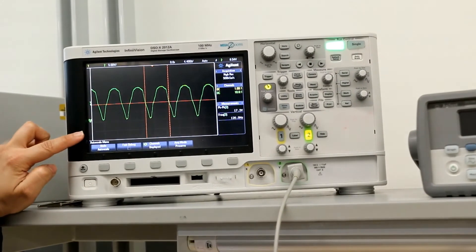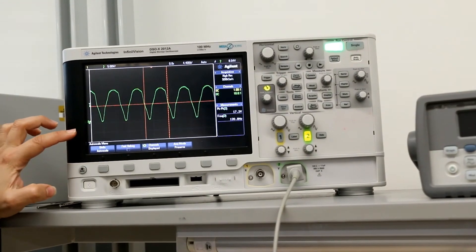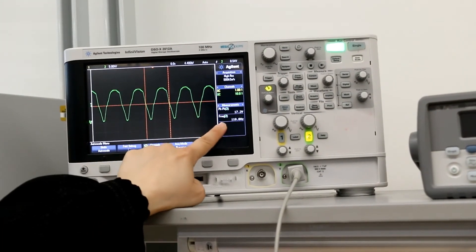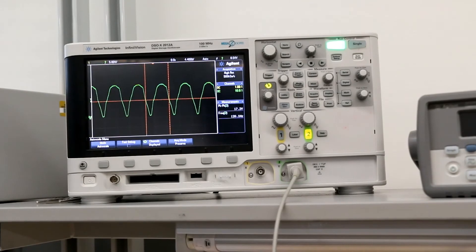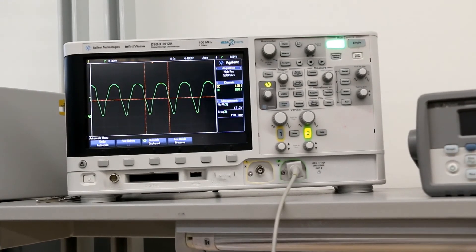So peak to peak is half of what we get in part 1, and the frequency is 120, which is double of what we get in part 1.